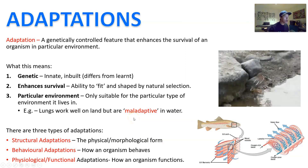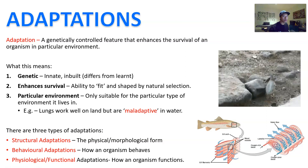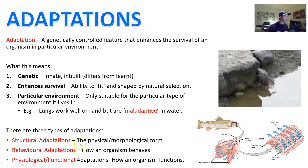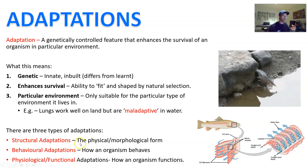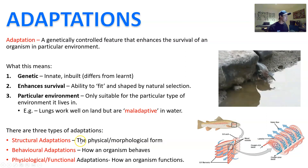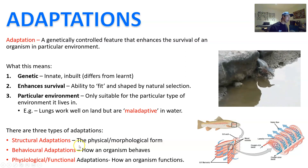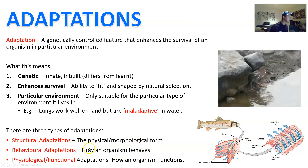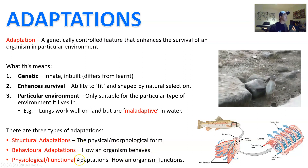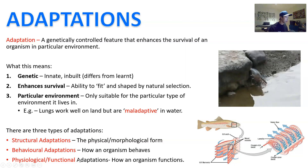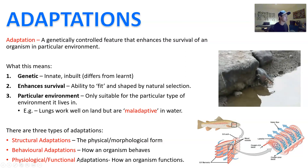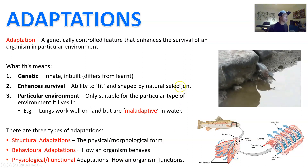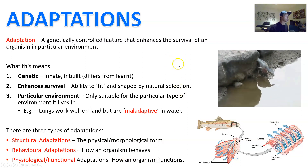There are three types of adaptations we're going to go through: structural adaptations, which relate to the physical or morphological form; behavioral adaptations, which describe how an organism behaves; and physiological or functional adaptations, which relate to how an organism functions.